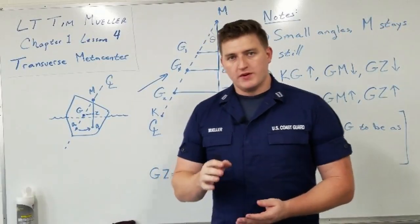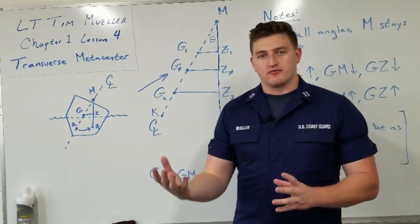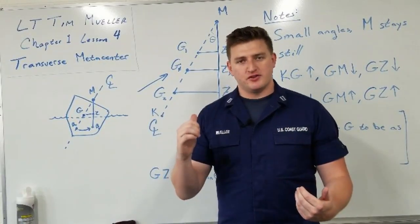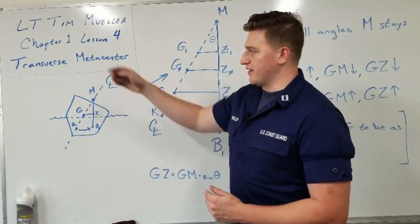In the previous lessons, we talked about moment couples, moments, and then we started going to the righting arm and righting moments. Now, let's bring that all back into a diagram and introduce what's called the Stability Triangle as well as the Transverse Meta Center, which is the topic of this lesson.